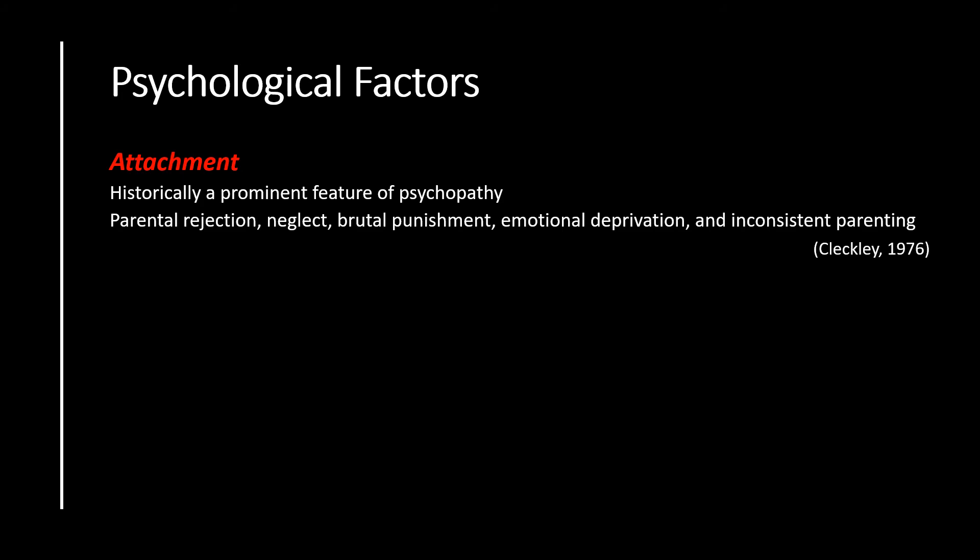Next, we briefly discuss some of the psychological factors which might underpin the development of psychopathy in adulthood. This lecture will specifically discuss attachment and hostile attribution biases. In terms of attachment, Dr Hervey Cleckley in 1976 notes that attachment has historically been a prominent feature of psychopathy. Parental rejection, neglect, brutal punishment, emotional deprivation and inconsistent parenting have all been associated with higher scores on psychopathy measures.